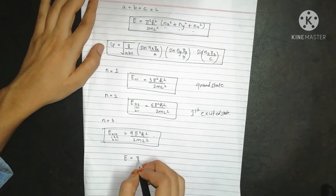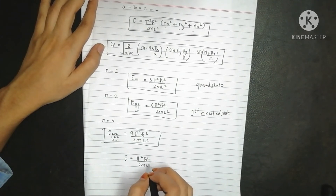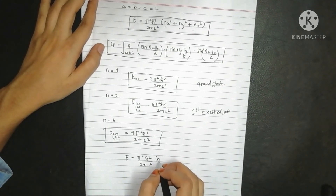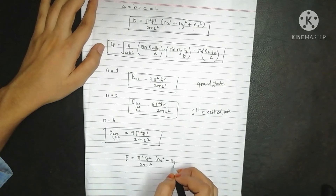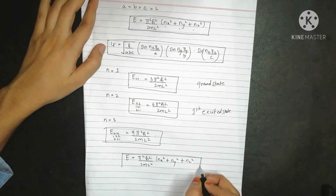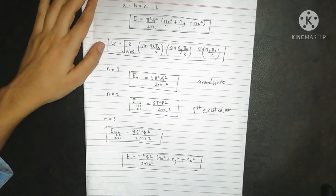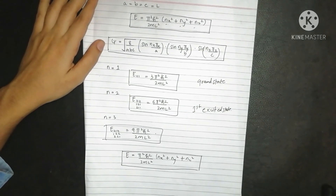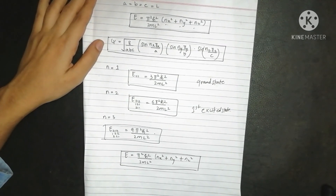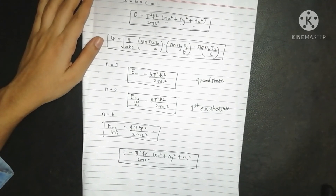The key formula to remember is: E = (π²h-bar²/2mL²)·(nx² + ny² + nz²). Depending on the state — ground state, first excited state, second excited state, or any state — you can substitute the quantum numbers to calculate the energy.